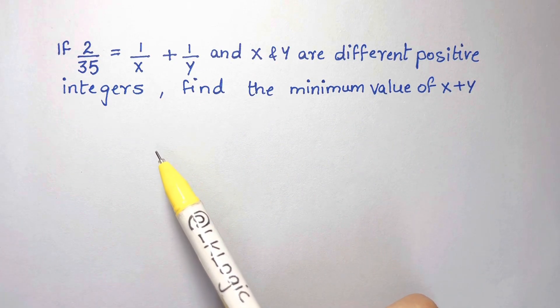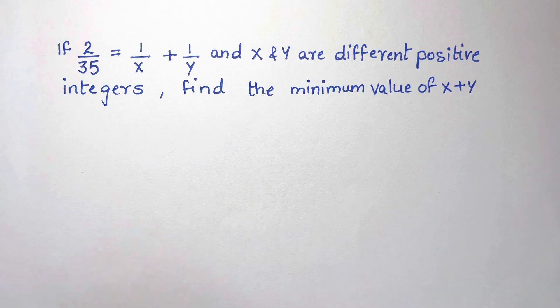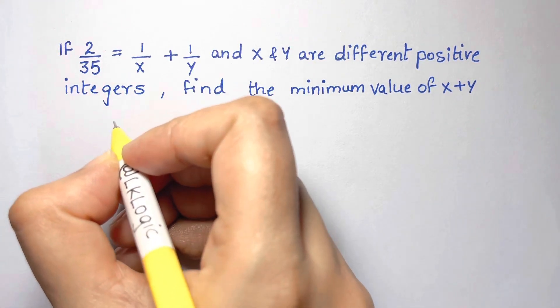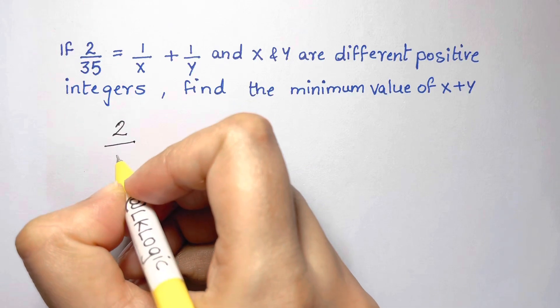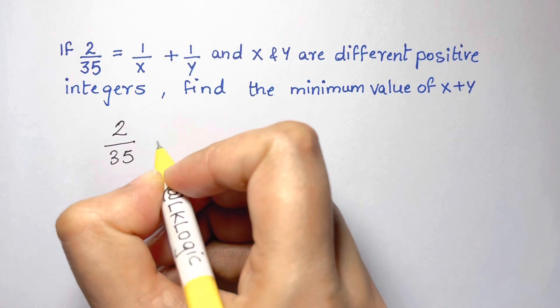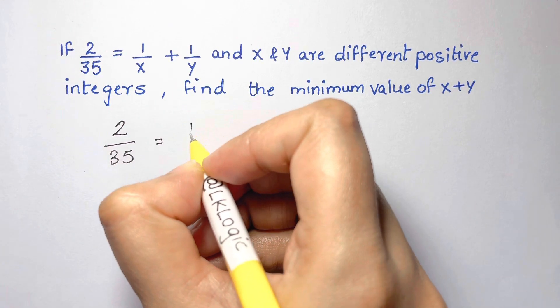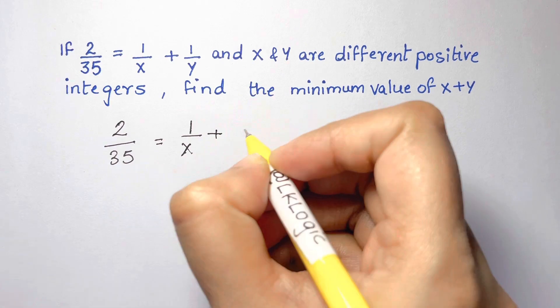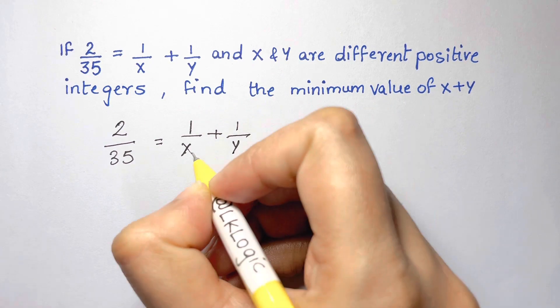So how are we going to solve this? The first step, what we are going to do here is, I'm going to write that first, 2/35 is equal to 1/x plus 1/y. This is what is given to us.